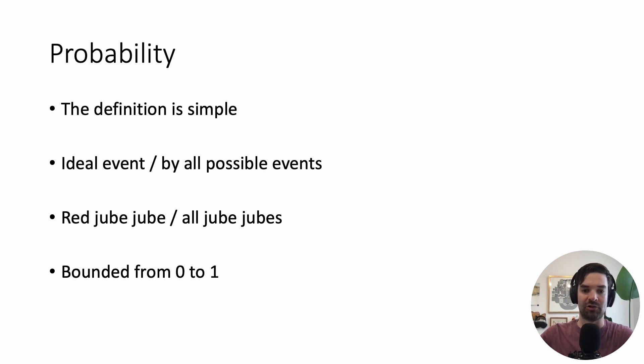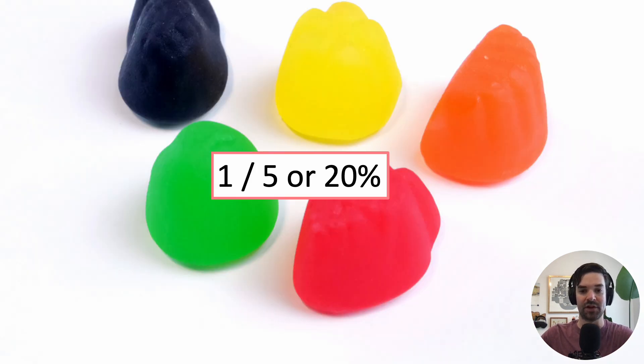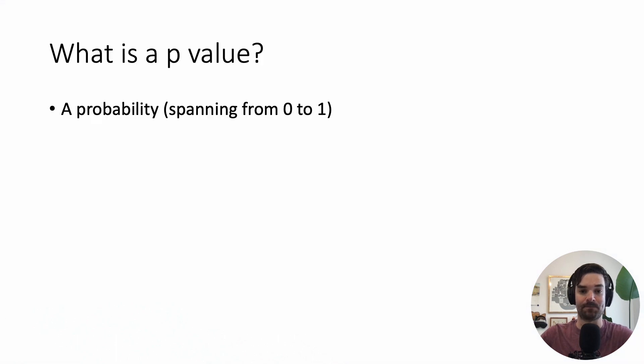And all probabilities are bounded from 0 to 1. You can't have a probability less than 0, and you can't have a probability greater than 1. So in this toy example, we can calculate that it is the ideal event. So there's one possible red jube-jube divided by all possible events, 5. And that leads to a probability of 0.2 or 20%. So what's a p-value? Well, it's a probability. So it must span from 0 to 1.